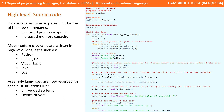Now, most modern programs are written in high-level languages, such as Python, the family of C languages, Visual Basic, Java, and Lua, just to name a few. Assembly languages are still written directly in today, but tend to be reserved for specialist situations like embedded systems and device drivers.